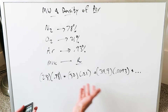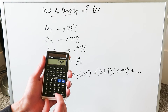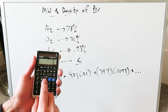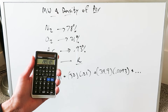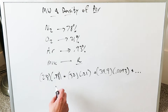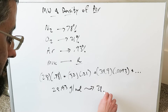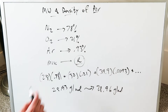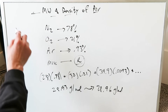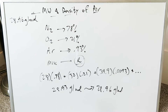We just have to do this calculation because we need it for the density calculation of air. You'll have 28 times 78% plus 32 times 21% plus 39.9 times 0.0093, which is the 0.93%. You're getting 28.93, and we can say 28.93 grams per mole — or if you want, you can round it up to 28.96 grams per mole, to account for the remainder. So the molecular weight of air is 28.96 grams per mole.